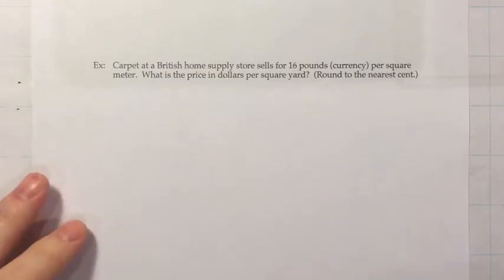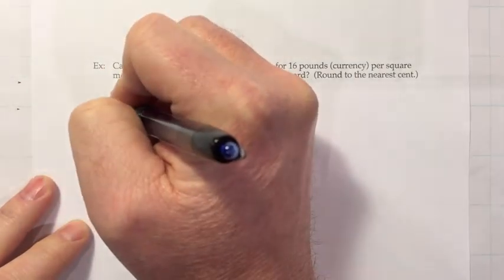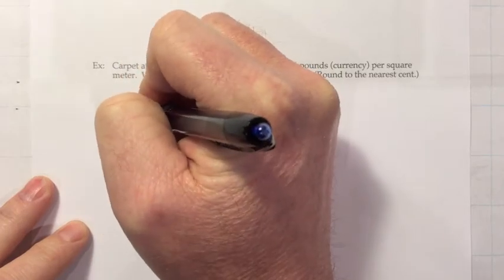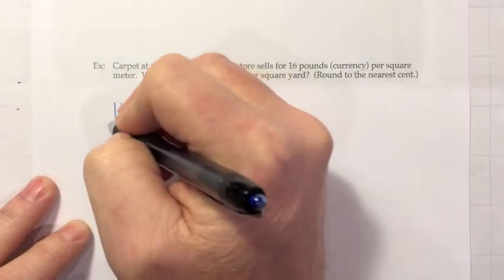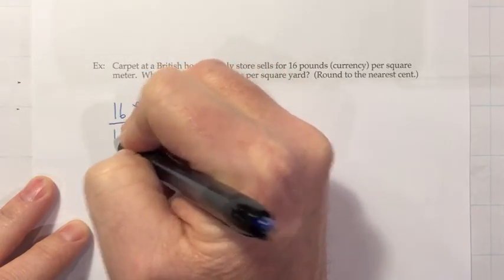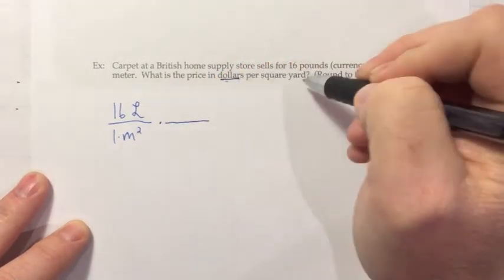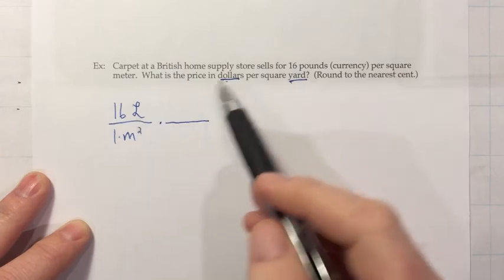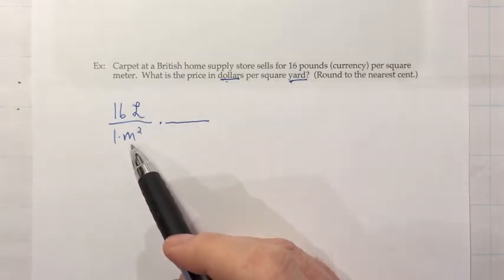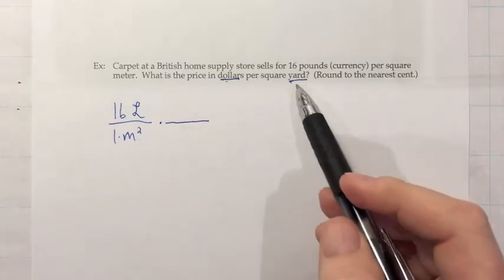All right, let's look at one final example. Carpet at a British home supply store sells for 16 pounds, which is the British measure of currency, per square meter. What is the price in dollars per square yard? And round it to the nearest cent. So a whole lot going on here. Let's just start off with what they gave us. 16 pounds, which I believe they used kind of a fancy L for that, per square meter. So that's over meters squared. We could put a 1 there I suppose. And now we have to get to dollars per square yard, which means we want to change the currency from pound to dollars, and the measurement of area from square meters to square yards.